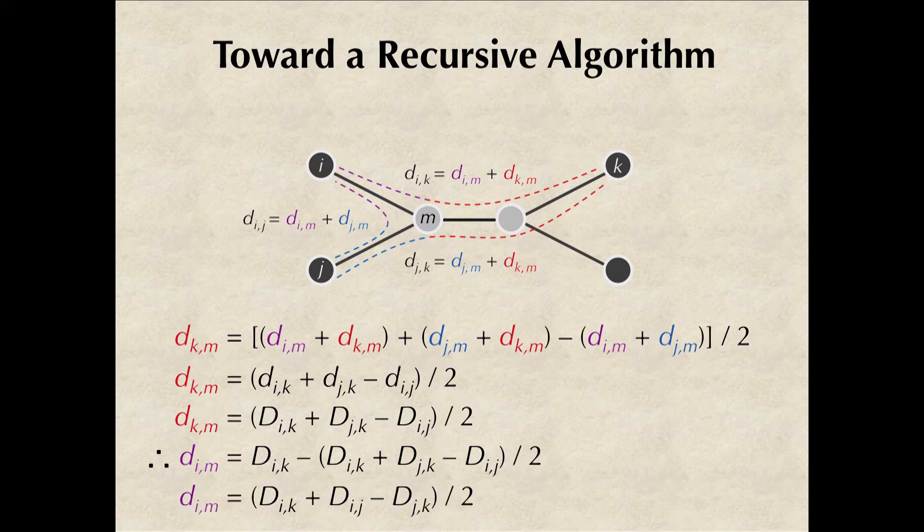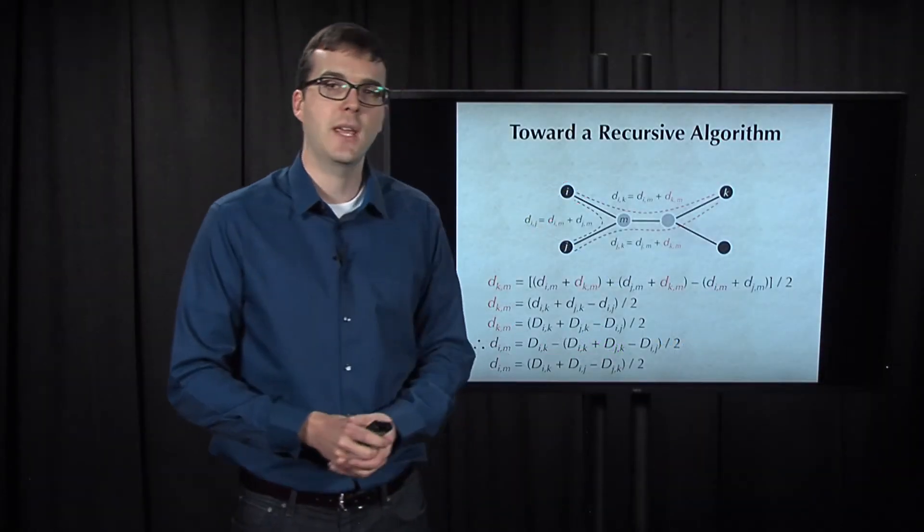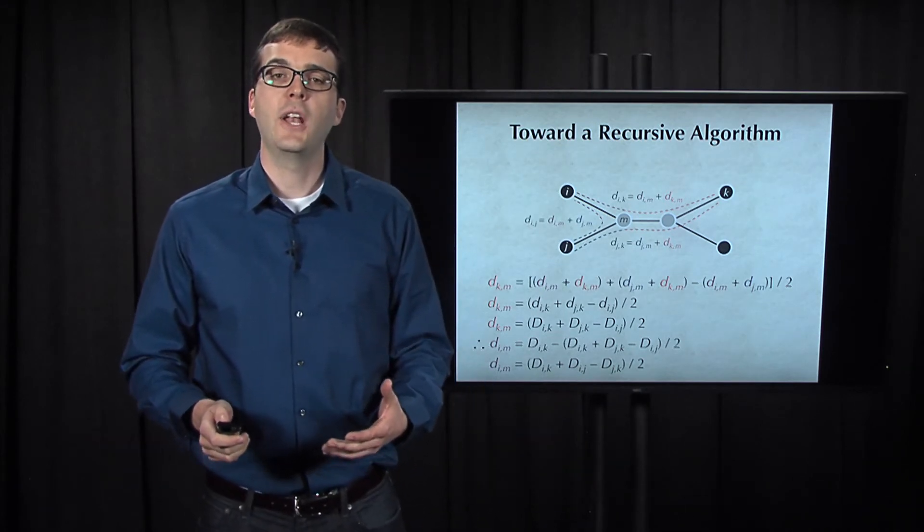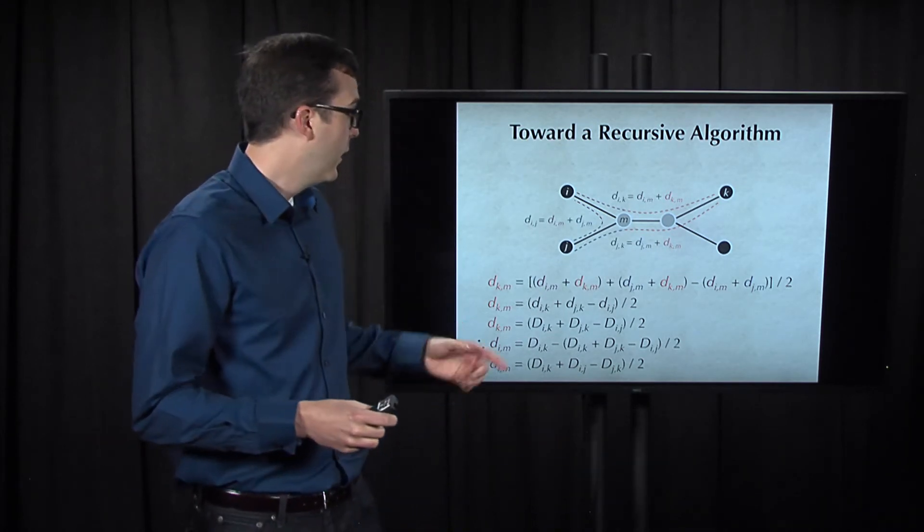Combining terms gives us that the distance from i to m is equal to the distance from i to k plus the distance from i to j minus the distance from j to k, all divided by two. An analogous formula holds for the distance from j to m.